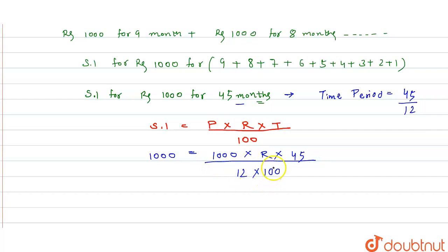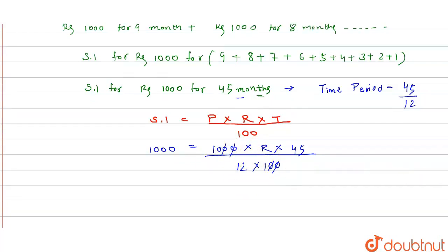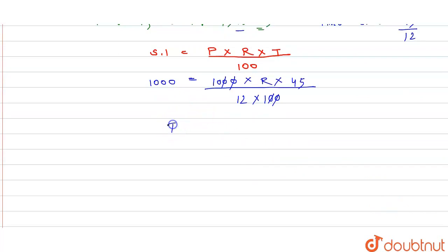Yahan se, ye zero se, ye zero cancel ho jayengi. Yahan se hum rate of interest ke lihi solve ker sakti hai. Humara rate of interest kitna a jae ga, that is equals to one thousand into 12 divided by, yeh multiplication mei chala gya, divided by 45 into 10. Yahan se, ye zero se, ye zero bhi cancel.